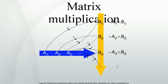Frobenius product: the Frobenius inner product, sometimes denoted ⟨A, B⟩, is the component-wise inner product of two matrices as though they are vectors. It is also the sum of the entries of the Hadamard product. Explicitly, where TR denotes the trace of a matrix and VEC denotes vectorization. This inner product induces the Frobenius norm.